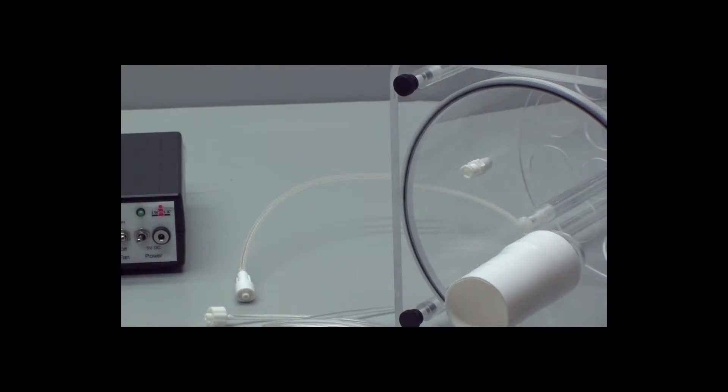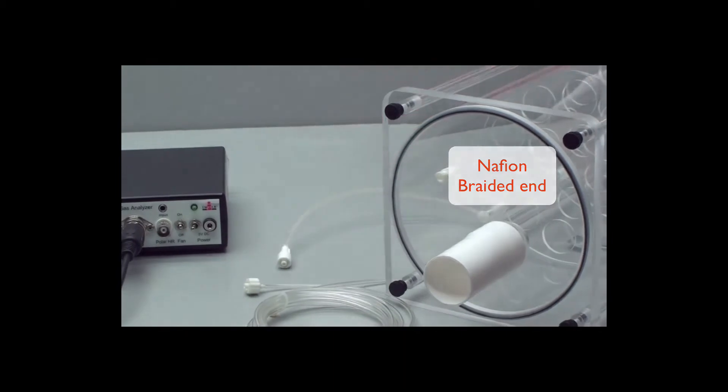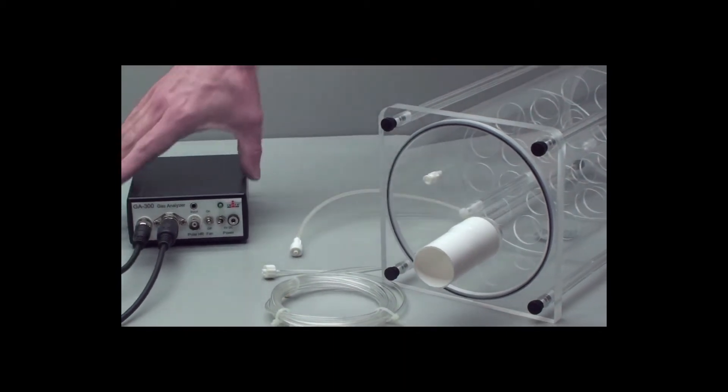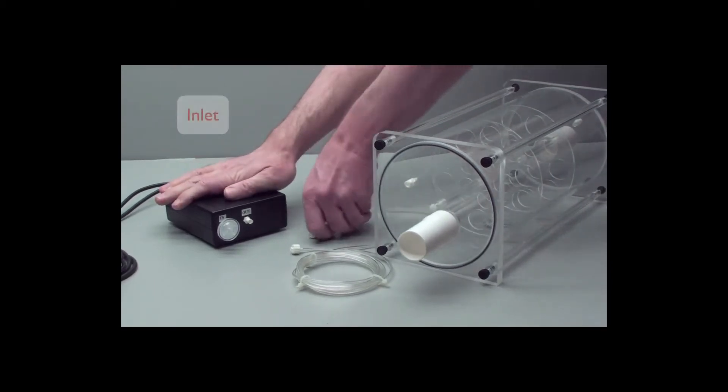With the Nafion clear tubing, find the braided end. That goes into the inlet of the gas analyzer on the back side.